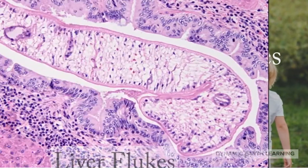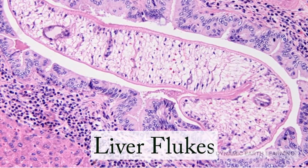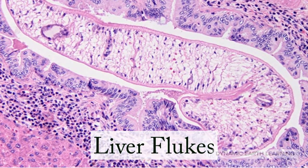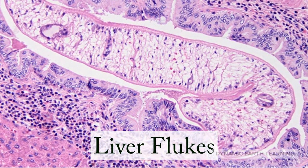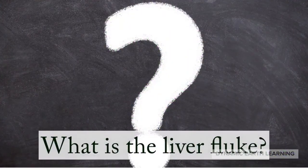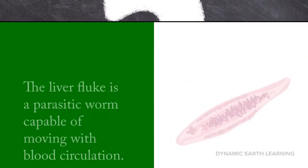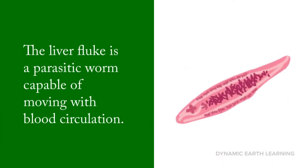Liver flukes are an uncommon yet present danger in aquaponic agriculture. The liver fluke is a parasitic worm. They are parasites of the liver, bile ducts, or gallbladder of various mammals, including humans, which are capable of moving with blood circulation.